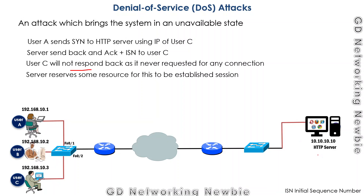At the server end, the server reserves some resources for this to-be-established connection. It saves information in its memory, indicating that it is waiting for an acknowledgement from the user who just requested contents. But since user C never requested anything, user C will not respond back, and the server will keep waiting for that acknowledgement.